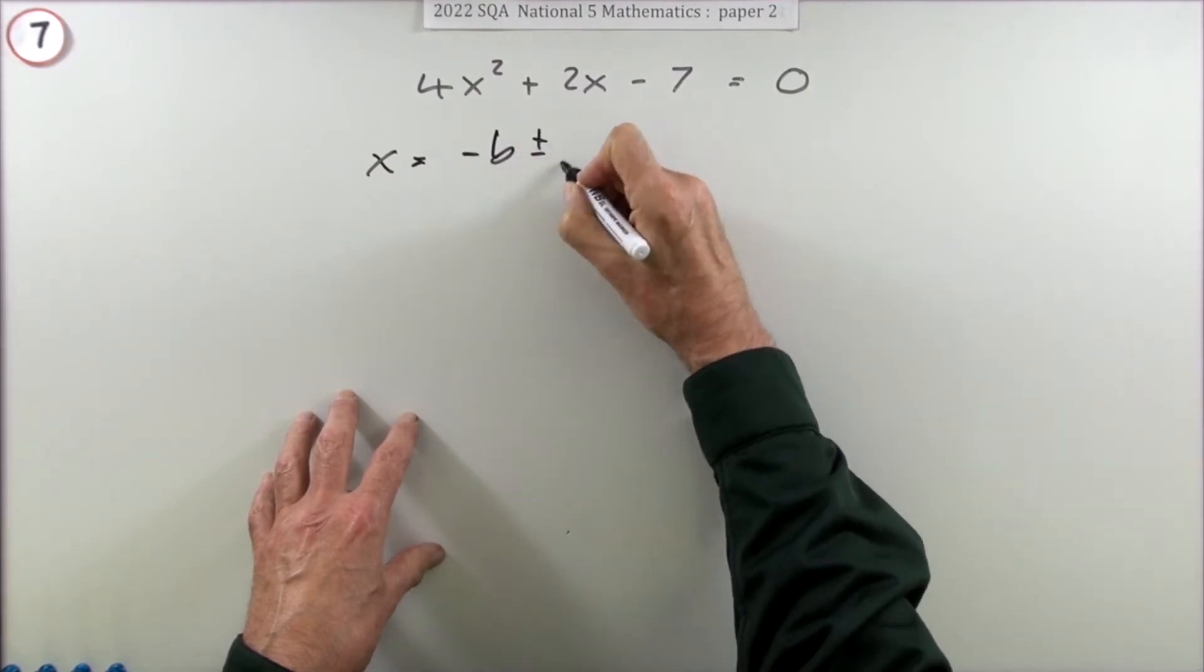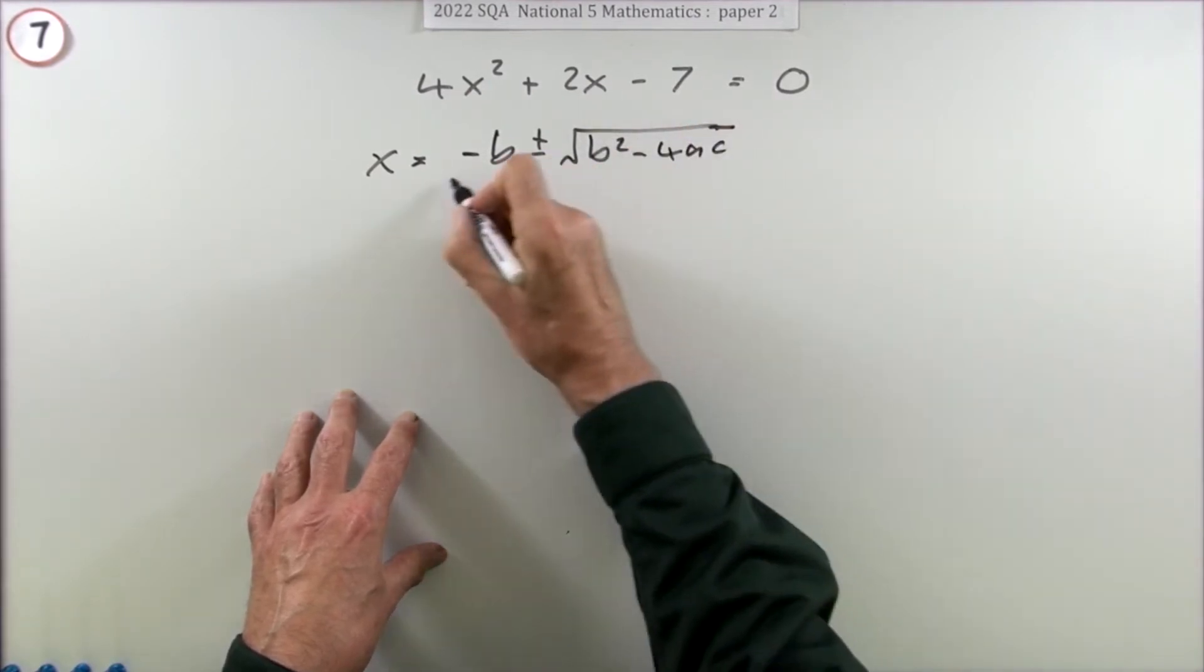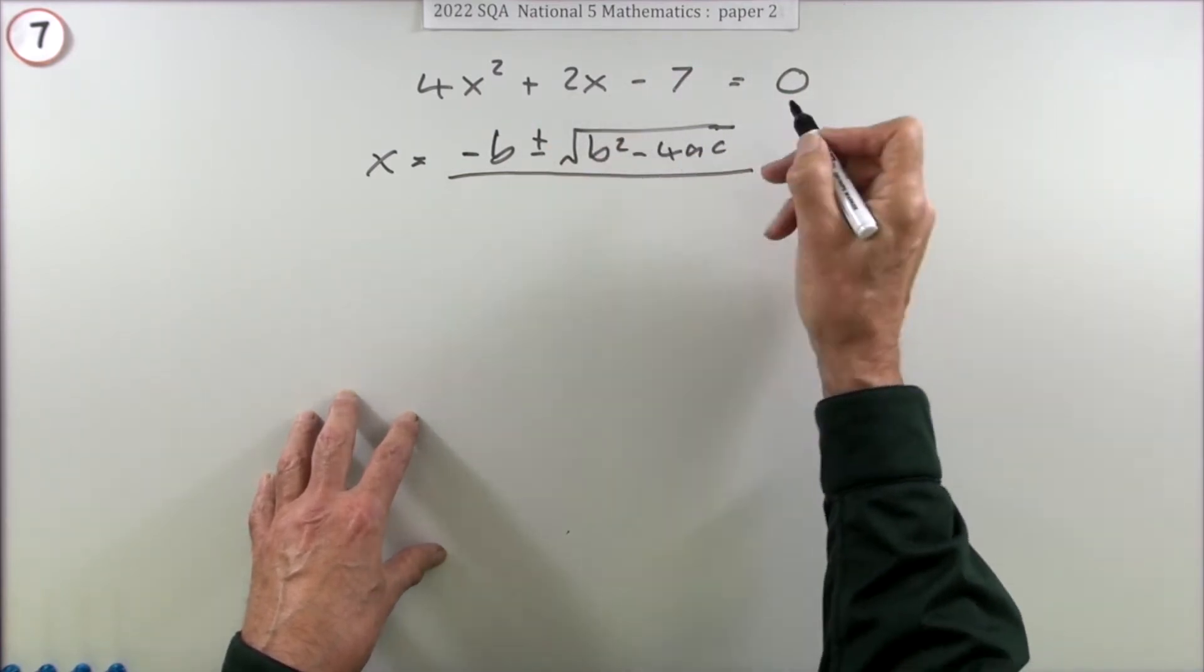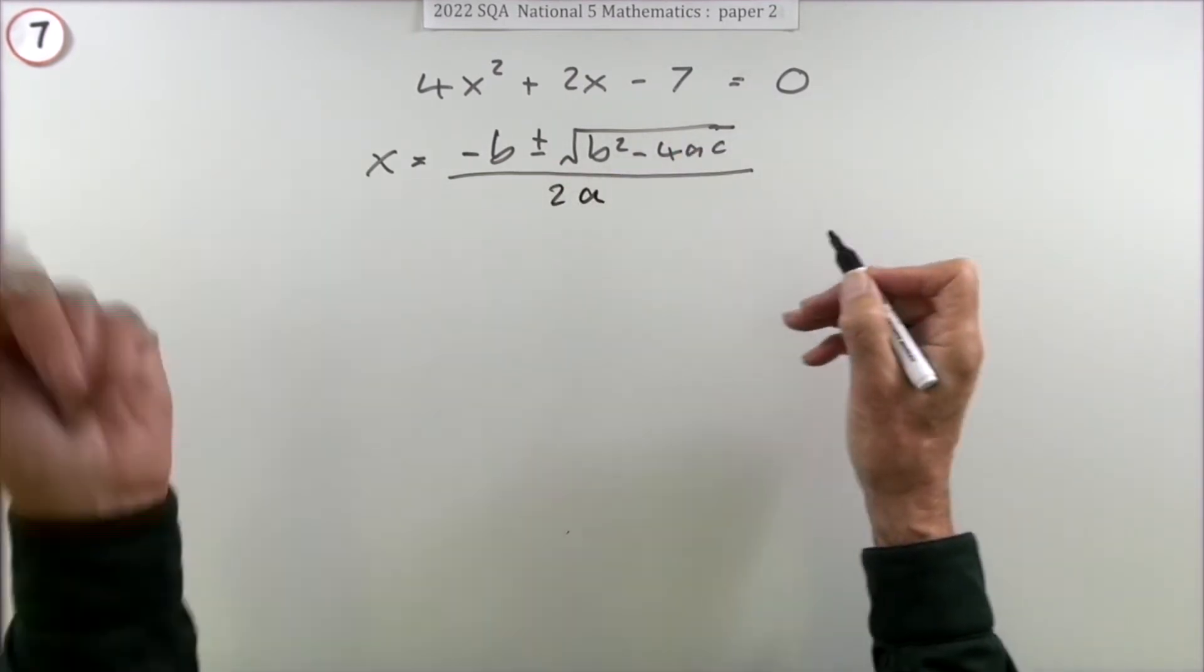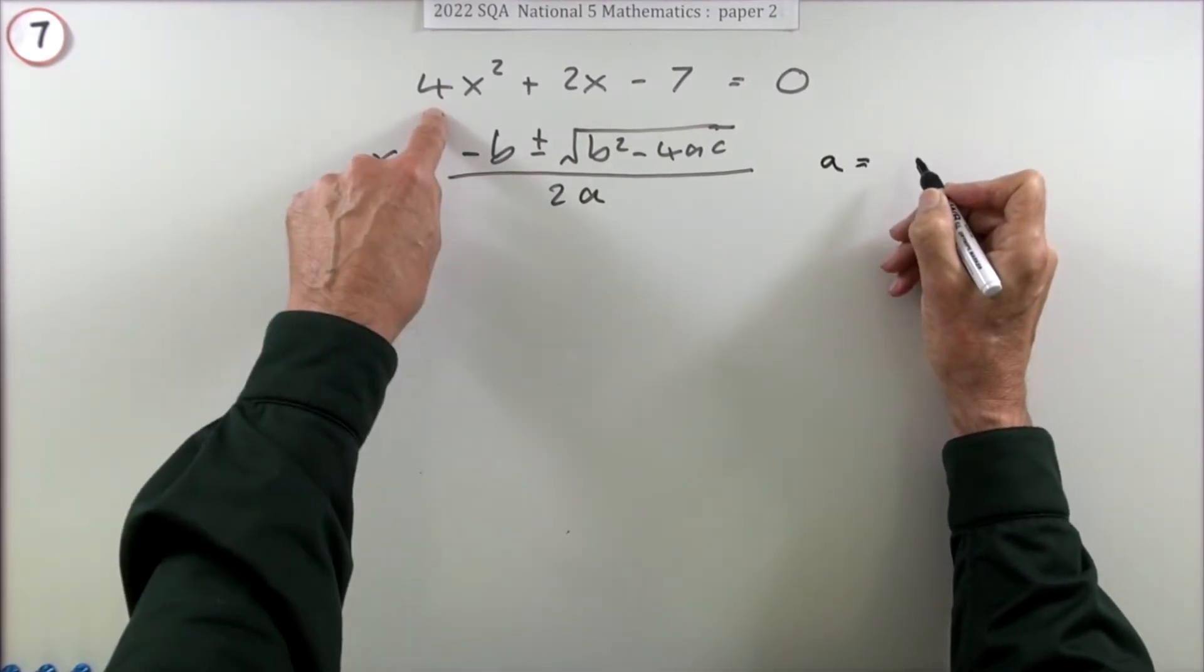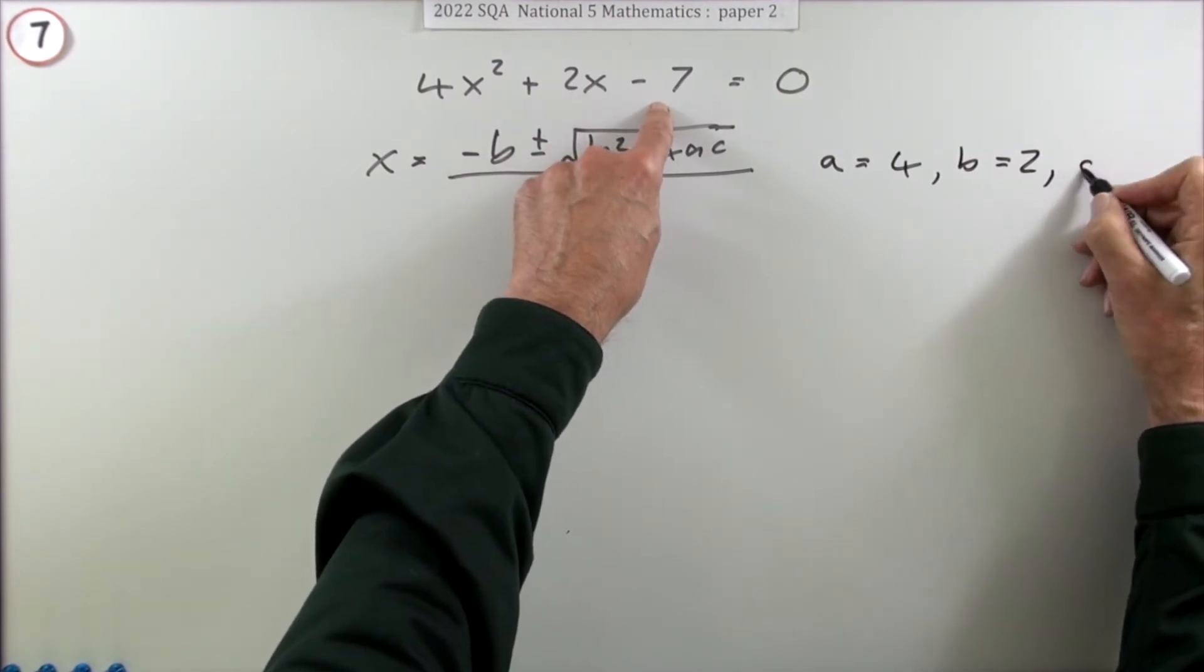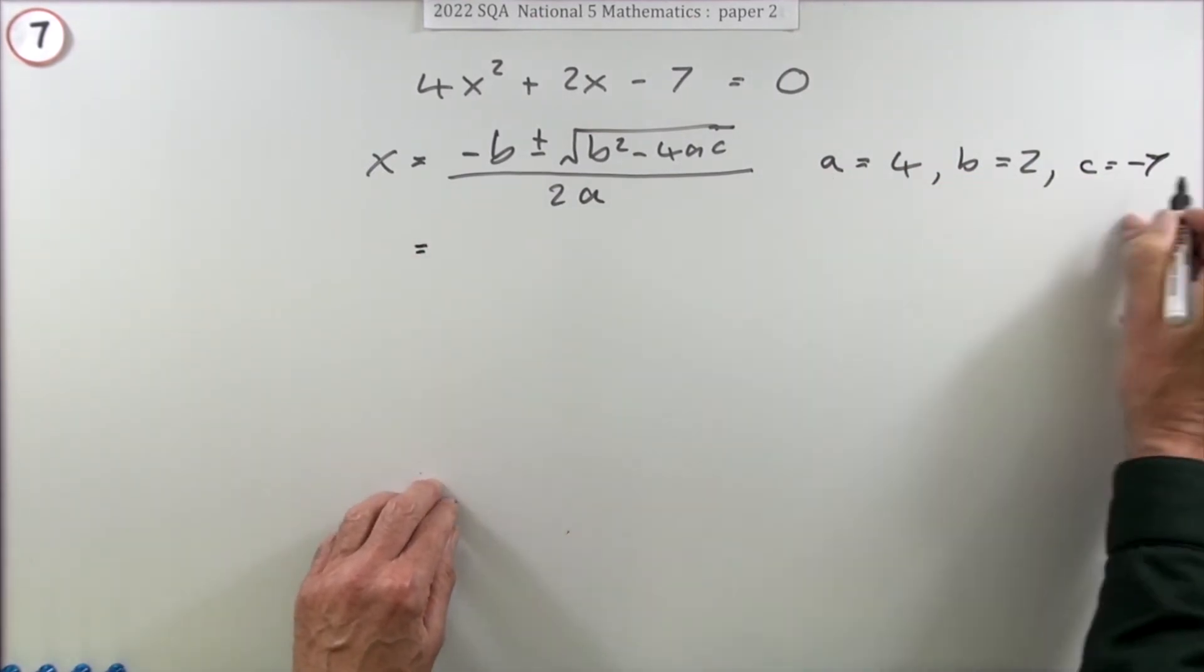First step: write the formula. The solution x will be negative b plus or minus the square root of b² minus 4ac, the content of that square root being the discriminant that determines the nature of the answers, over 2a. You don't get marks for copying that from the front. Identifying the parts: a is 4, the coefficient of the x² term; b is 2, the coefficient of the x term; and c is -7, the constant.